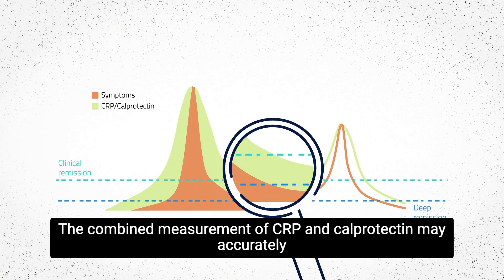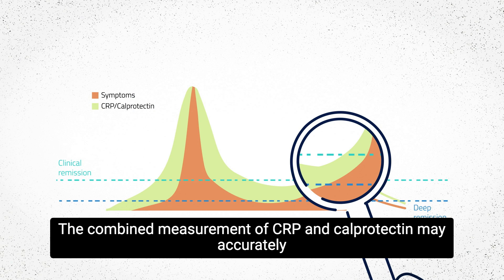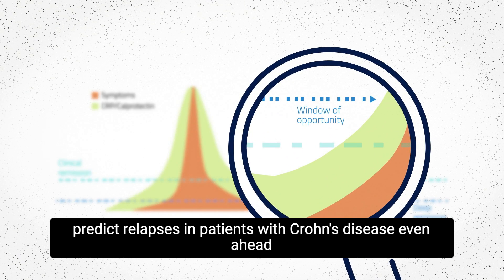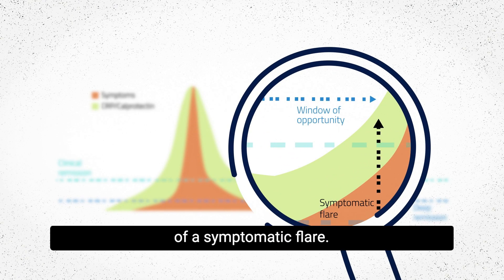The combined measurement of CRP and calprotectin may accurately predict relapses in patients with Crohn's disease, even ahead of a symptomatic flare.